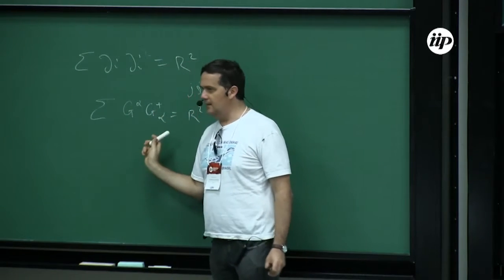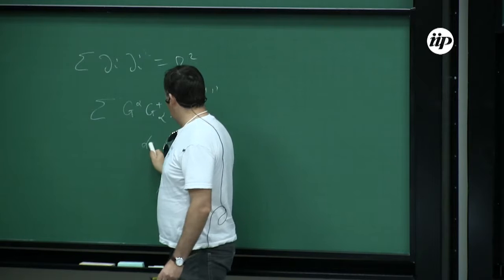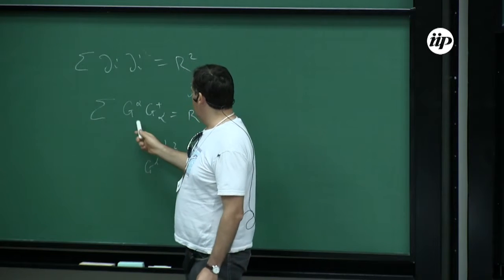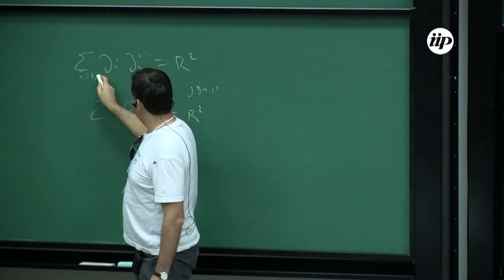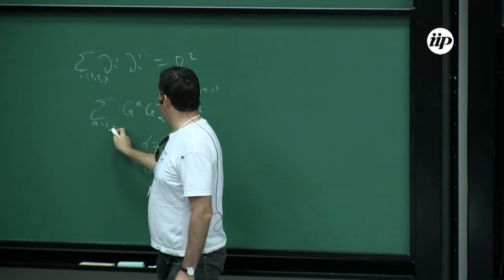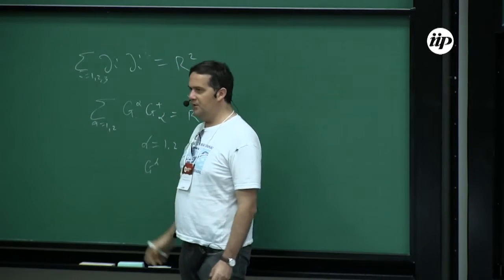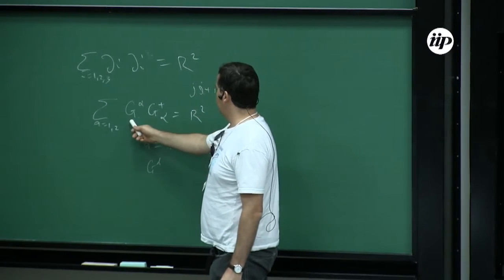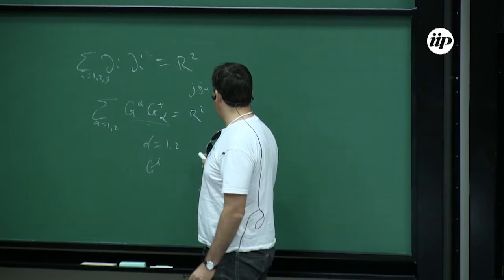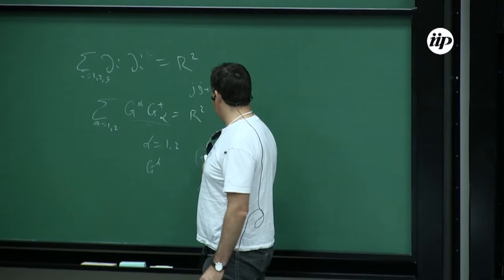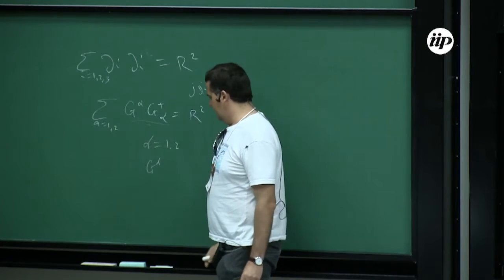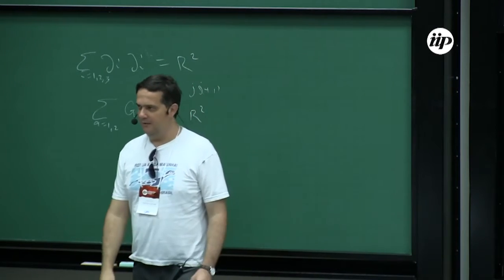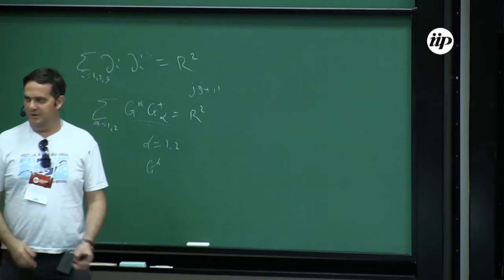One can write down a condition like this: here alpha is one and two, and G_alpha is complex. This would look like it's a condition for a fuzzy three-sphere, which is why people were initially confused. But even at this simple level you can find out that one of these G's is real, so effectively this is a two-sphere. You can be much more precise than this simple physical interpretation.